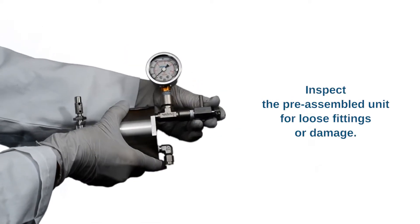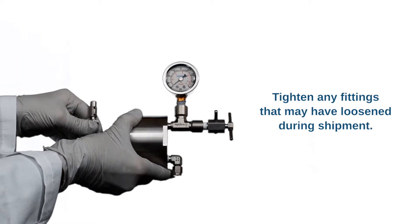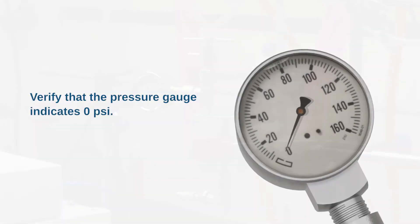Step 1: Inspection and assembly. Inspect the pre-assembled unit for loose fittings or damage. Verify that the pressure gauge indicates 0 psi. If the gauge does not read 0, please contact us.